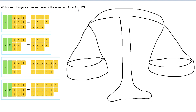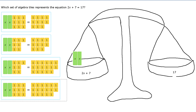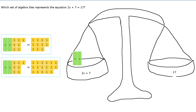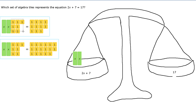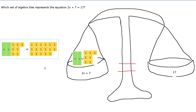We know we need 2 x's on the left — it doesn't look like we're dealing with any negative numbers. So let's put on the left side our 2 x's, and on the right side we need 17 blocks. We also need 7 blocks on the left. Let's look for a choice with 7 on the left. We narrow it down to these two: we know the right side has 17 blocks, so it can't be the other one — this must be the correct answer.